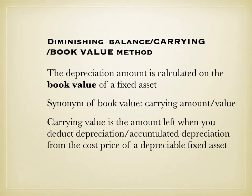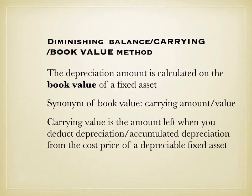The first method is what we call the diminishing balance, carrying value, or book value method. Whether you use diminishing, carrying value, or book value, it doesn't matter — you need to know the synonyms. The book value method calculates depreciation on the book value, which is the amount left when you subtract accumulated depreciation from the cost price of a depreciable fixed asset.